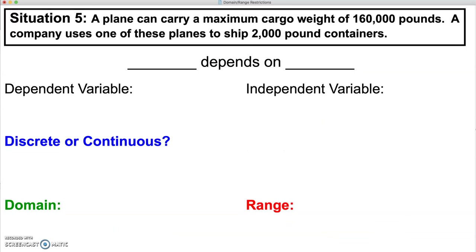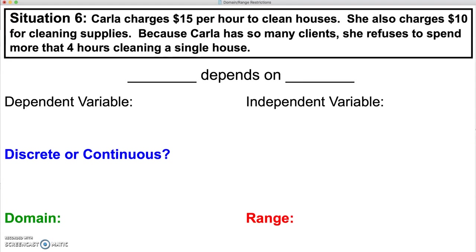Situation 5 is going to be an on-your-own problem. Make sure to write that depends statement so that it will help you determine your independent and dependent variables, and you'll write your domain and range and whether it's discrete or continuous. Situation 6 is also on-your-own. Stay tuned.